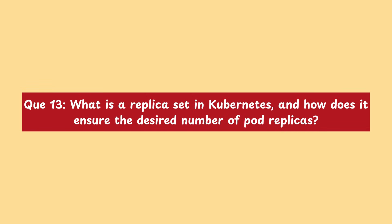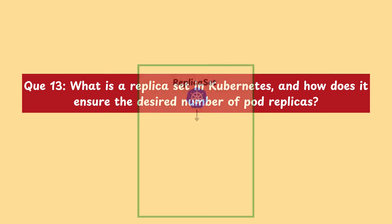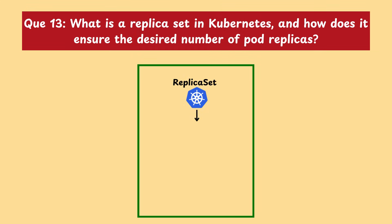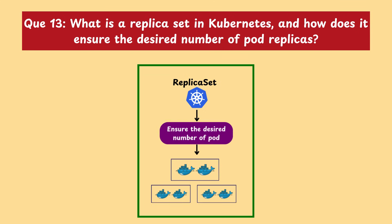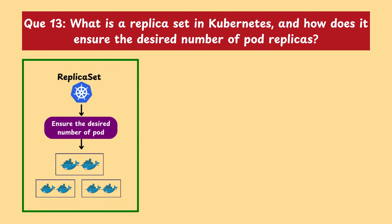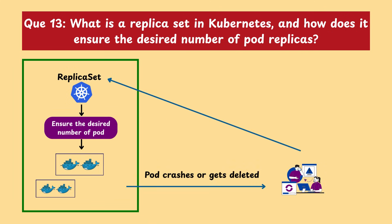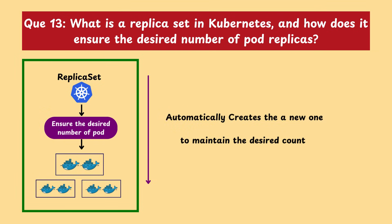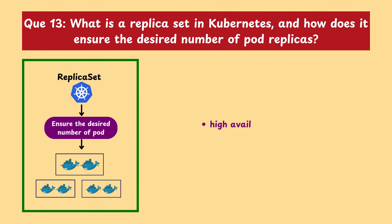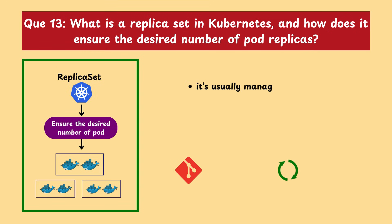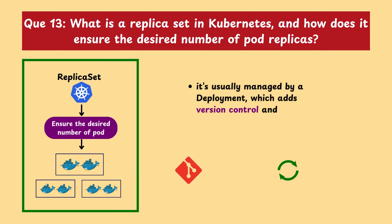How does a ReplicaSet ensure the desired number of pod replicas? A ReplicaSet in Kubernetes ensures that a specific number of pod replicas are always running. If a pod crashes or gets deleted, the ReplicaSet will automatically create a new one to maintain the desired count. This ensures high availability and reliability of the application. While you can use a ReplicaSet directly, it's usually managed by a deployment, which adds version control and rolling updates on top.